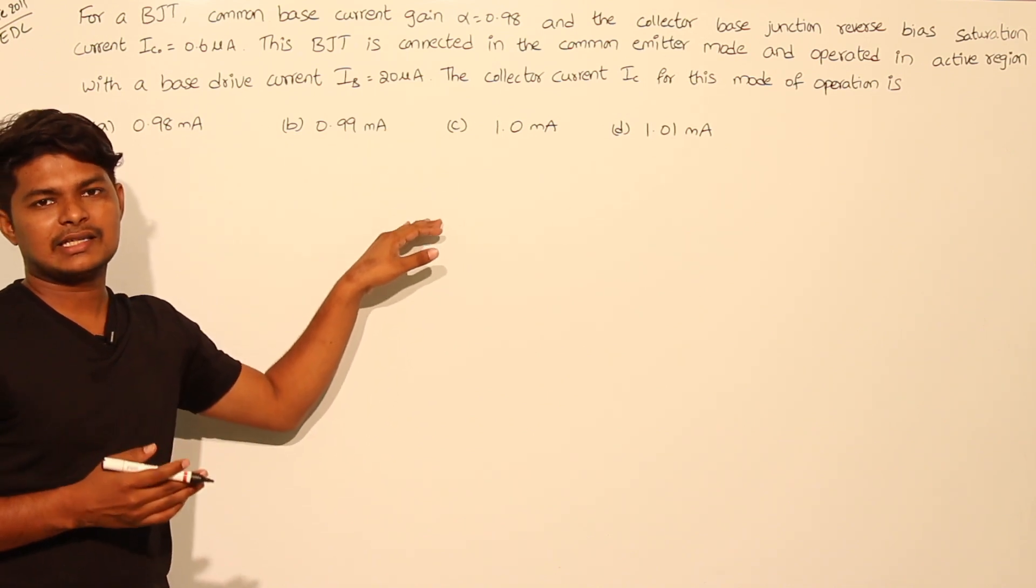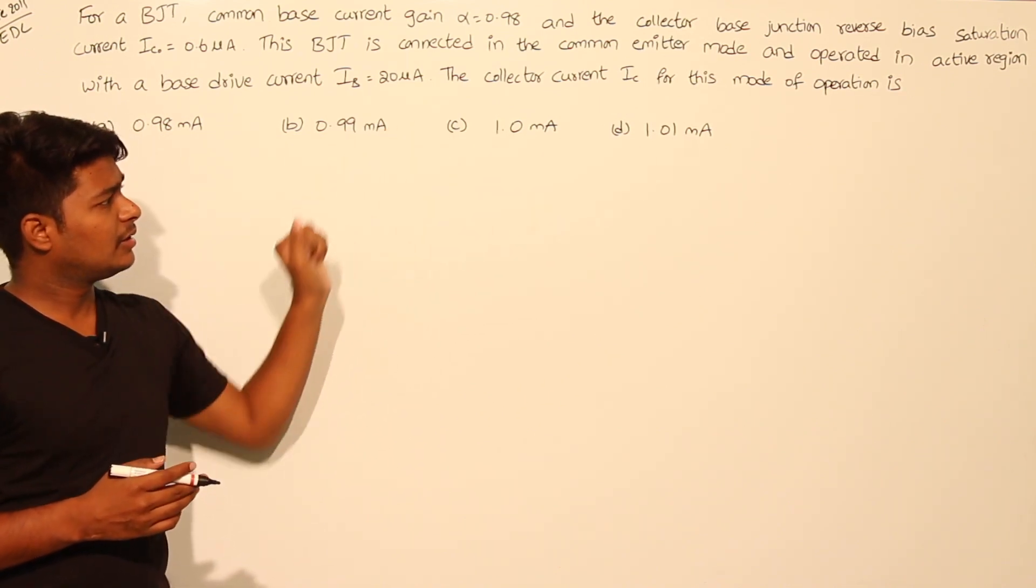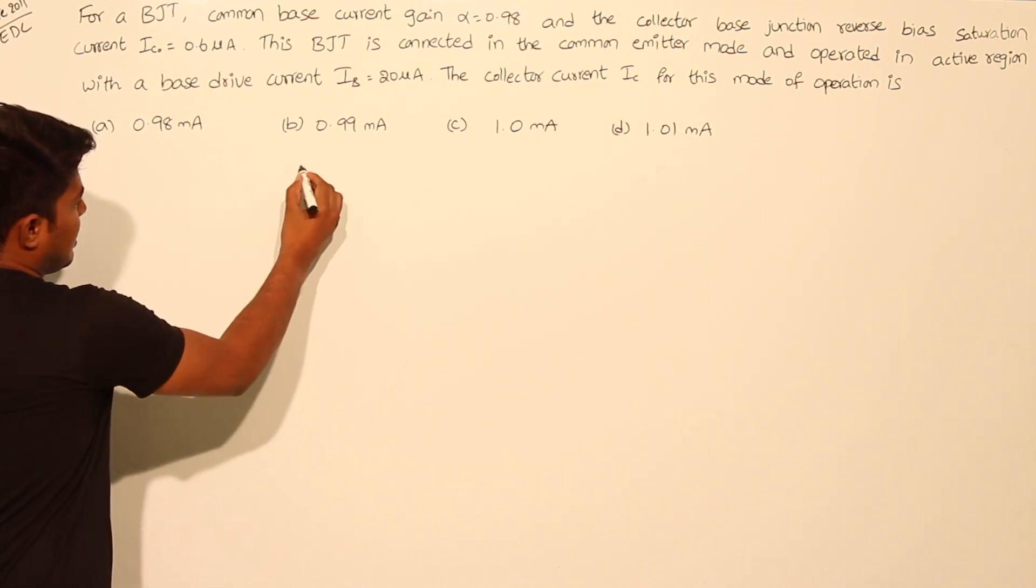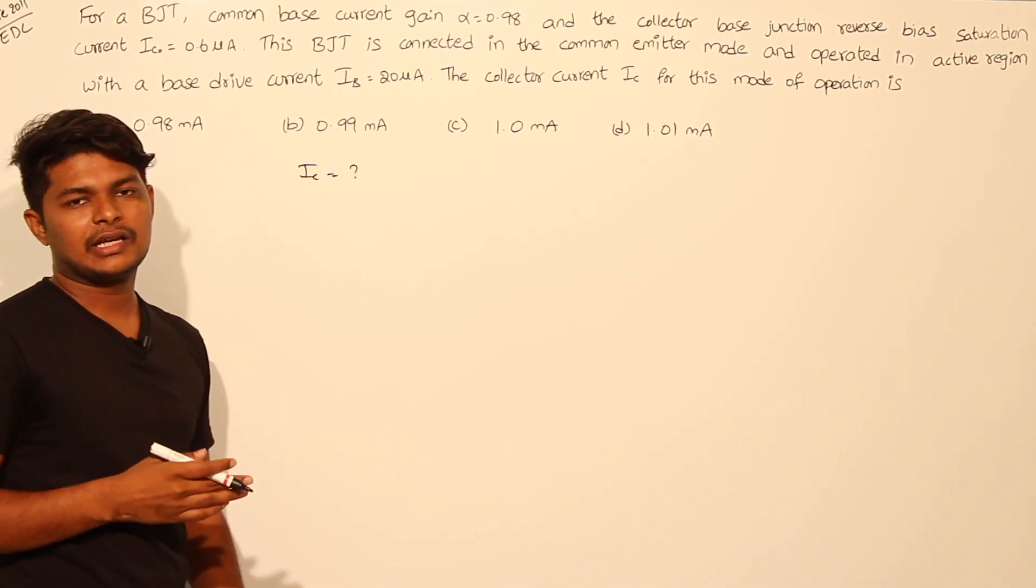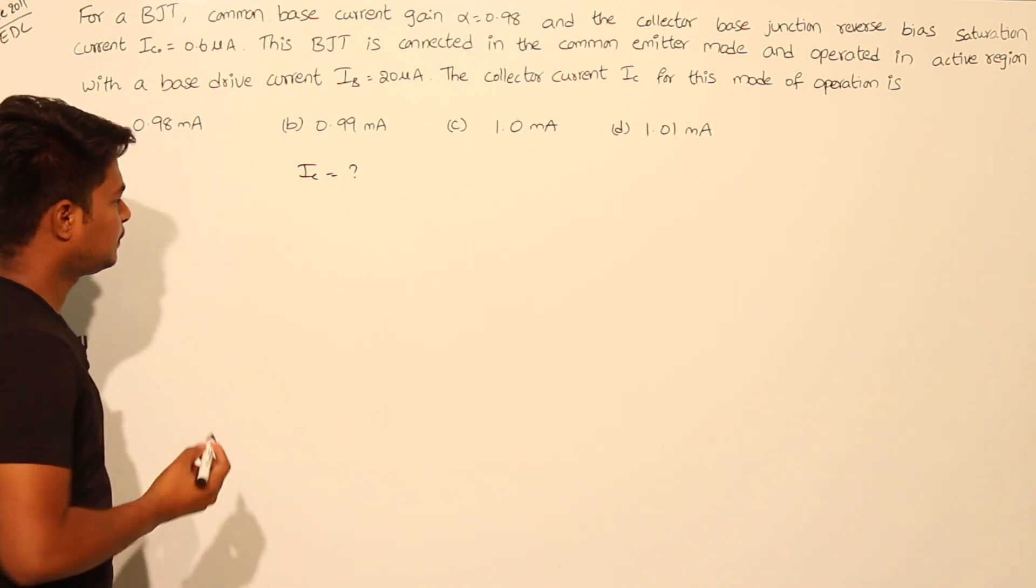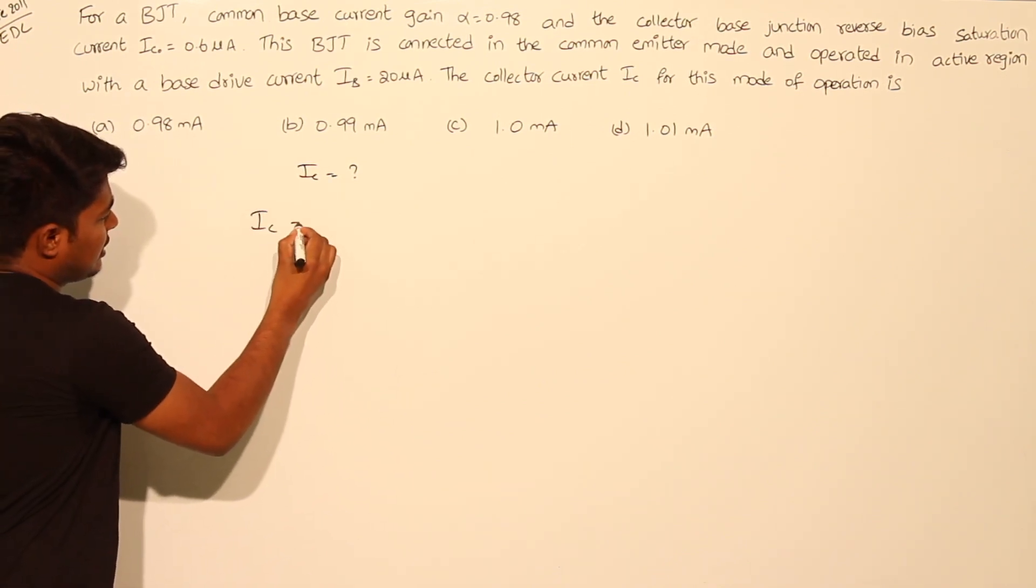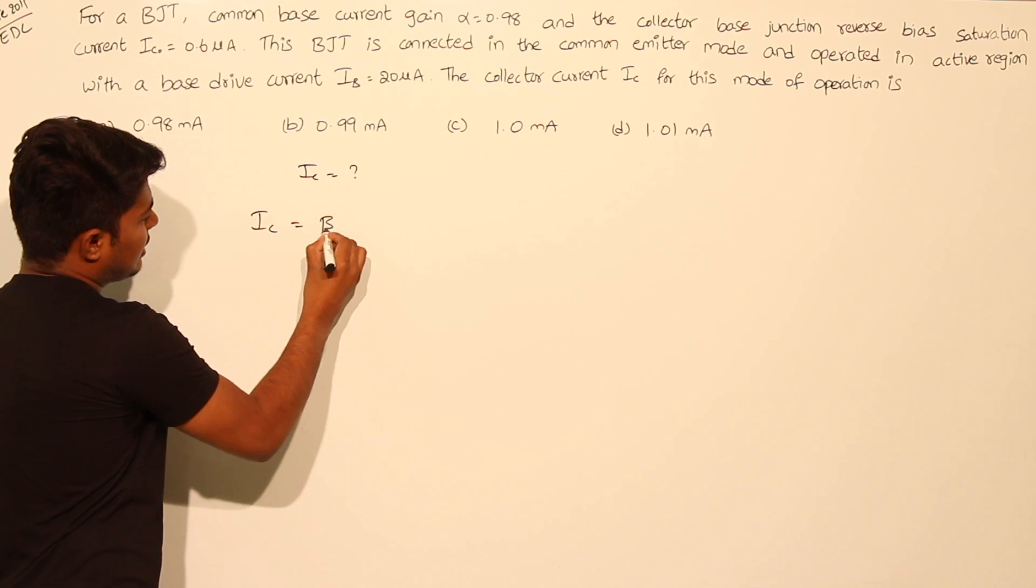They are asking collector current in the CE configuration, IC equals question mark. We know that collector current equation in CE region equals beta IB plus (1 plus beta) into IC not.